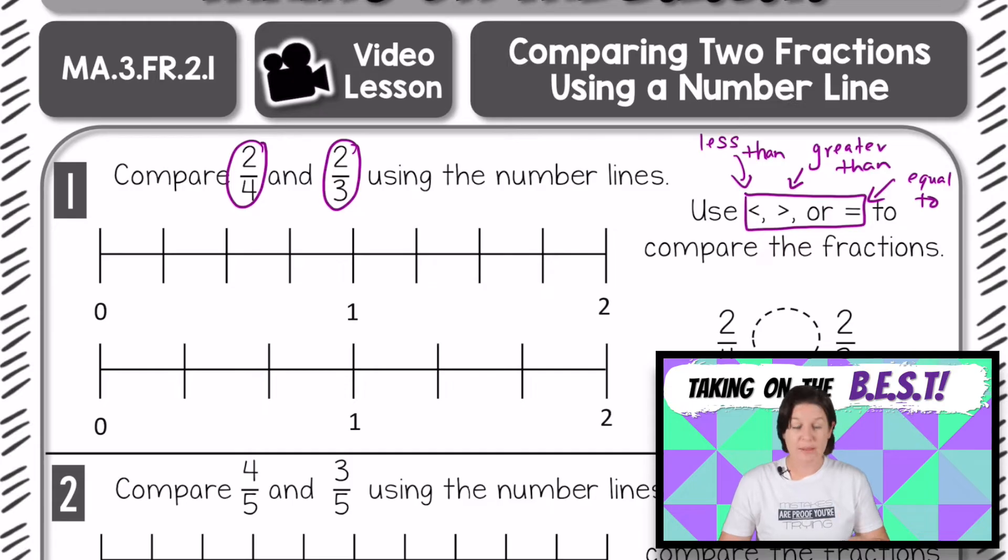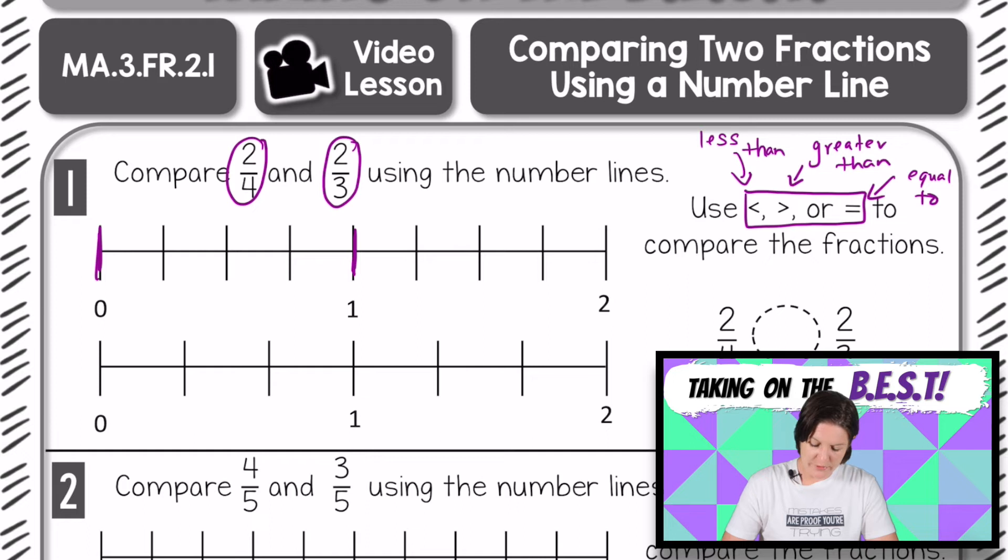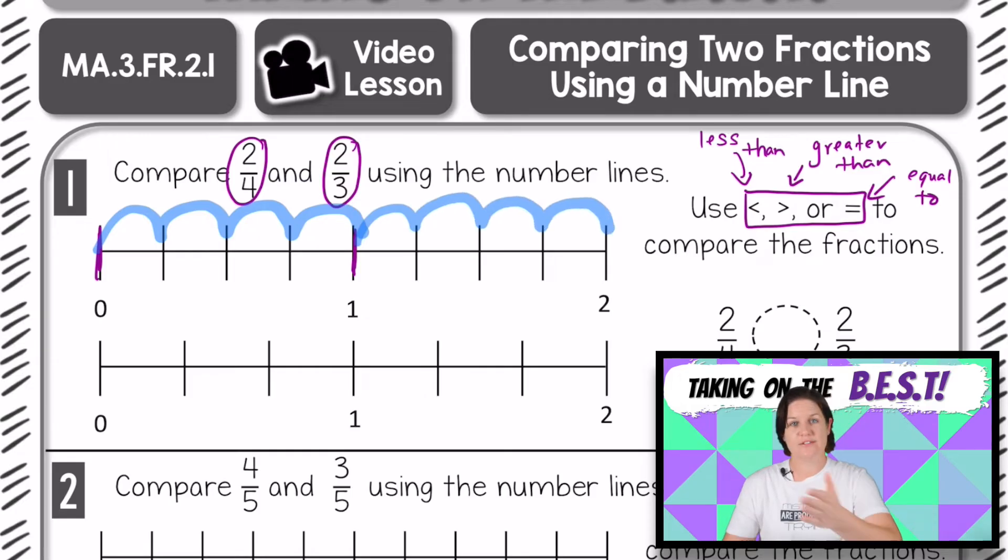We're going to be using that to compare our two fractions. So we are provided with two number lines. For the first one, let's use the top number line to plot the point of 2/4. So here we have zero, and here we have one. And I see right here that we have 1, 2, 3, 4 equal jumps between each whole. And if we go on to two, it would be 1, 2, 3, 4 jumps to get to two. So in between each whole number set, we have four equal jumps.